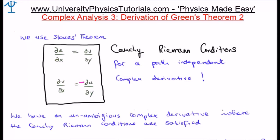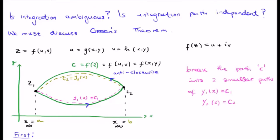We have an unambiguous complex derivative where the Cauchy-Riemann conditions are satisfied. However we don't know if integration is unambiguous. So is integration path independent when we talk about complex numbers, or a number with both a real and an imaginary component? This is basically what Green's theorem is all about.